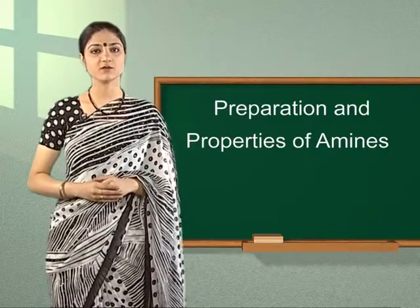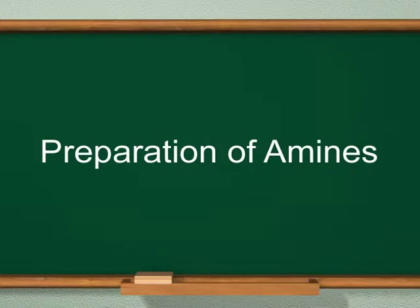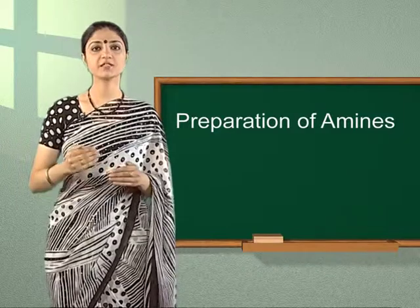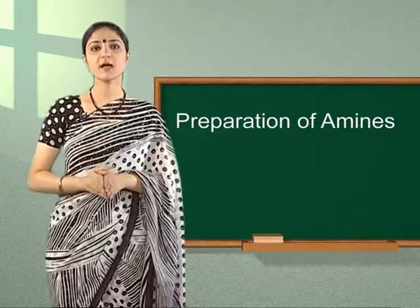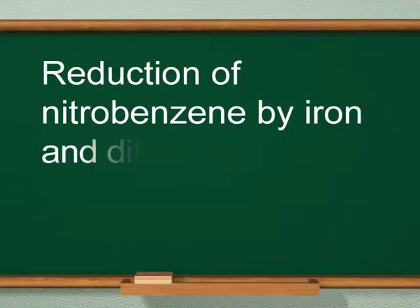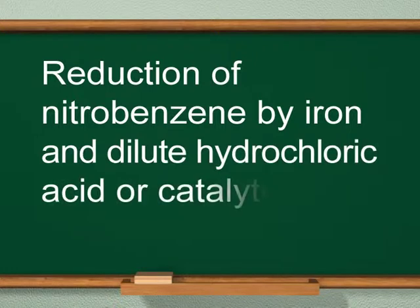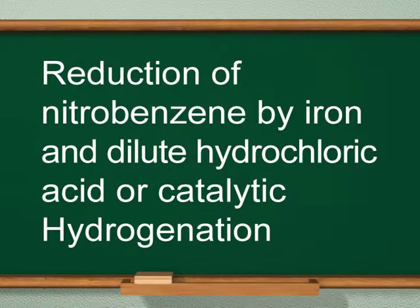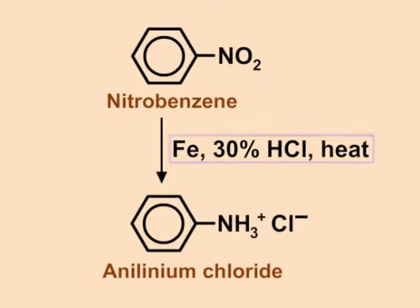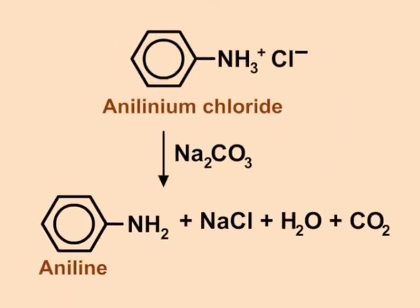Let us now learn about preparation of amines. Aniline, the most important amine, is prepared in several ways. The first method is reduction of nitrobenzene by iron and dilute hydrochloric acid, or by catalytic hydrogenation. Nitrobenzene on heating with iron and 30% hydrochloric acid forms aniline chloride, which on treatment with sodium carbonate forms aniline.